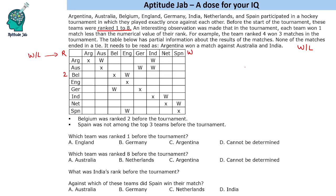A team ranked 1 will have 0 wins, rank 2 will have 1 win, rank 3 will have 2 wins, and so on. The team ranked 8 shall have 7 wins. Now, looking at the table closely, Argentina, Australia, and Belgium have won matches, but England has not won any match. Apart from England, all other teams have won at least 1 match. So England was ranked 1 with 0 wins.